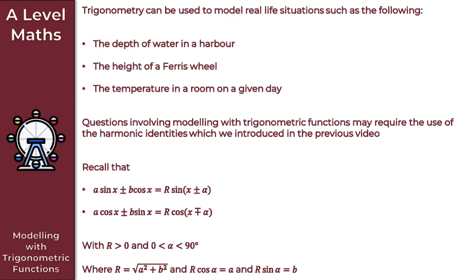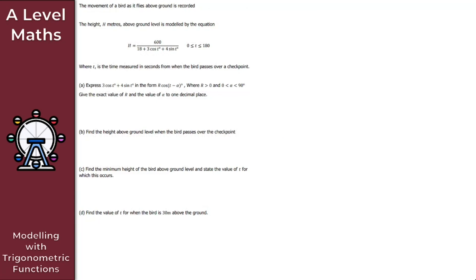We're now going to take a look at one practice question on modeling with trigonometric functions. It is a long question broken down into four individual parts: A, B, C, and D. We're told that the movement of a bird flying above ground is recorded, and the height H meters above ground level is modeled by a given equation, where T is the time in seconds from when the bird passes over a checkpoint.